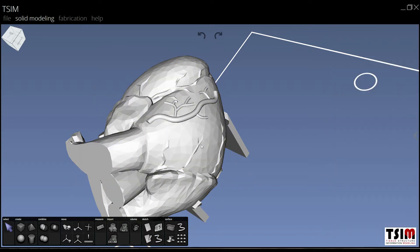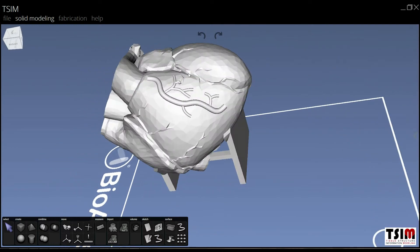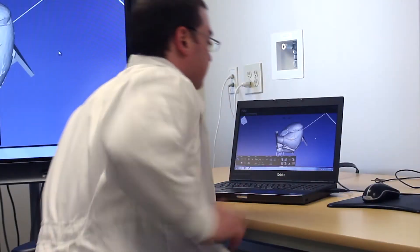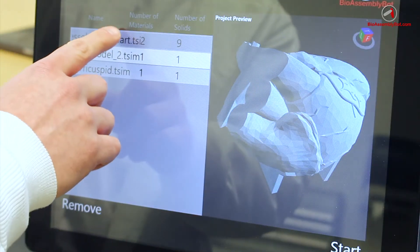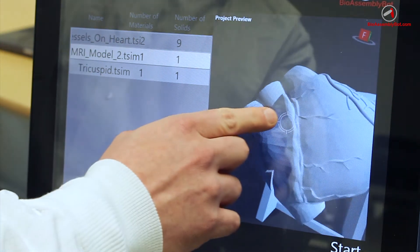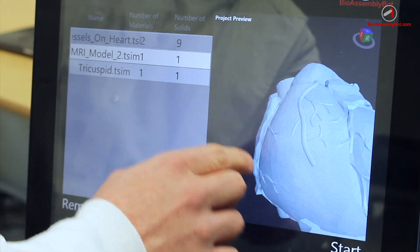Once constructed in TSIM, the model, including the added vascular tree, is then sent over to the BioAssemblyBot and chosen from the menu of possible projects to print.